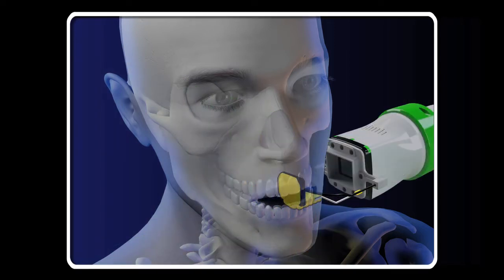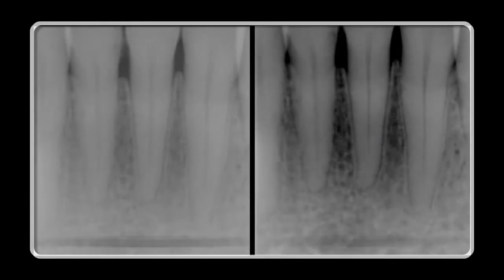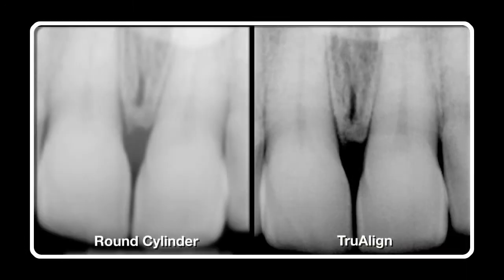TruAlign acts like the scope on a rifle. The beam is only 2% larger than the receptor. By drastically reducing scatter radiation and collimating the beam, the images regardless of machine or receptor type are clearer and crisper and contain greater information as shown here in this side-by-side comparison. This translates into improved patient care and increased practice revenue.